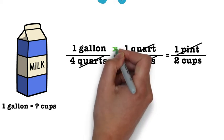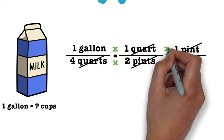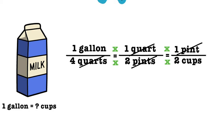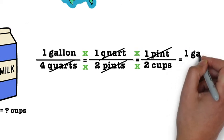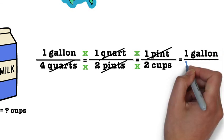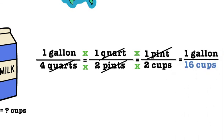The last thing that we would need to do for this problem is to multiply across. The remaining unit on top will remain on the top and the remaining unit on the bottom will remain on the bottom. When we multiply across, we should get one gallon over 16 cups, which gives us our answer. There are 16 cups in one gallon.